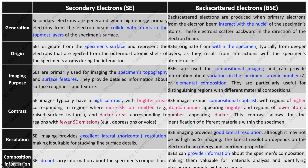Let's see the major differences between secondary and backscattered electrons. Secondary electrons are generated when high-energy primary electrons from the beam collide with atoms in the topmost layer of the specimen surface. Backscattered electrons are produced when primary electrons interact with the nuclei of the specimen's atoms and scatter backward in the direction of the electron beam. Secondary electrons originate from the outermost atomic shells, while backscattered electrons originate from deeper layers within the specimen.